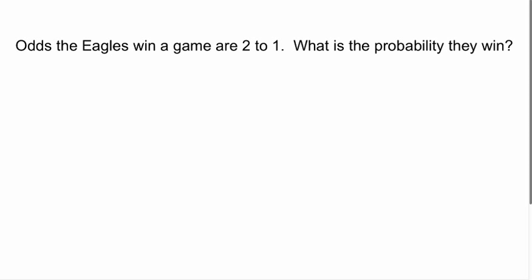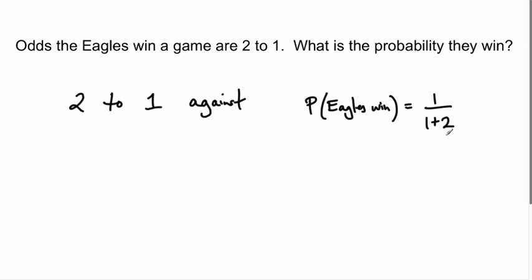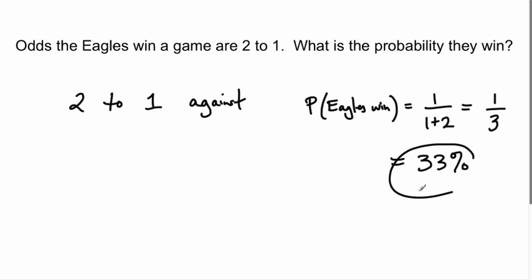Another example: the odds the Eagles win a game are two to one, meaning two to one against. What's the probability they win? Two to one against means one plus two total possibilities equals three. One over three means a thirty-three percent chance of winning. This also means every dollar bet on the Eagles, if they win, gives you back two dollars in addition to the one dollar you bet.